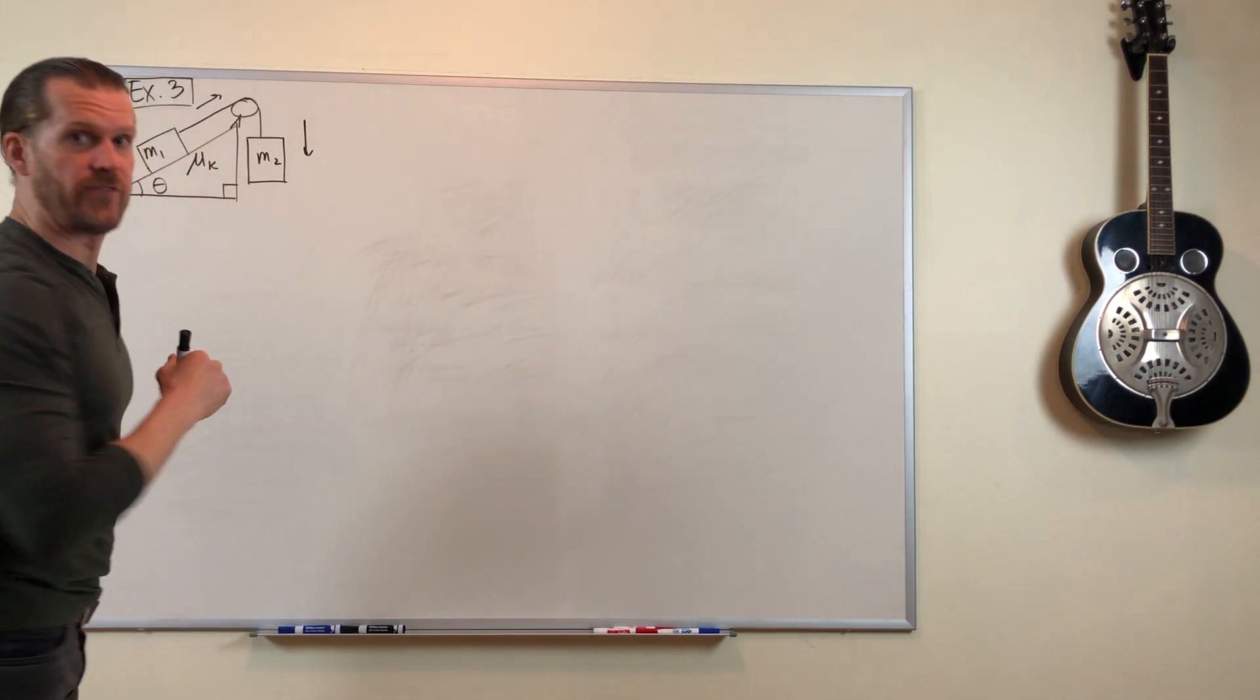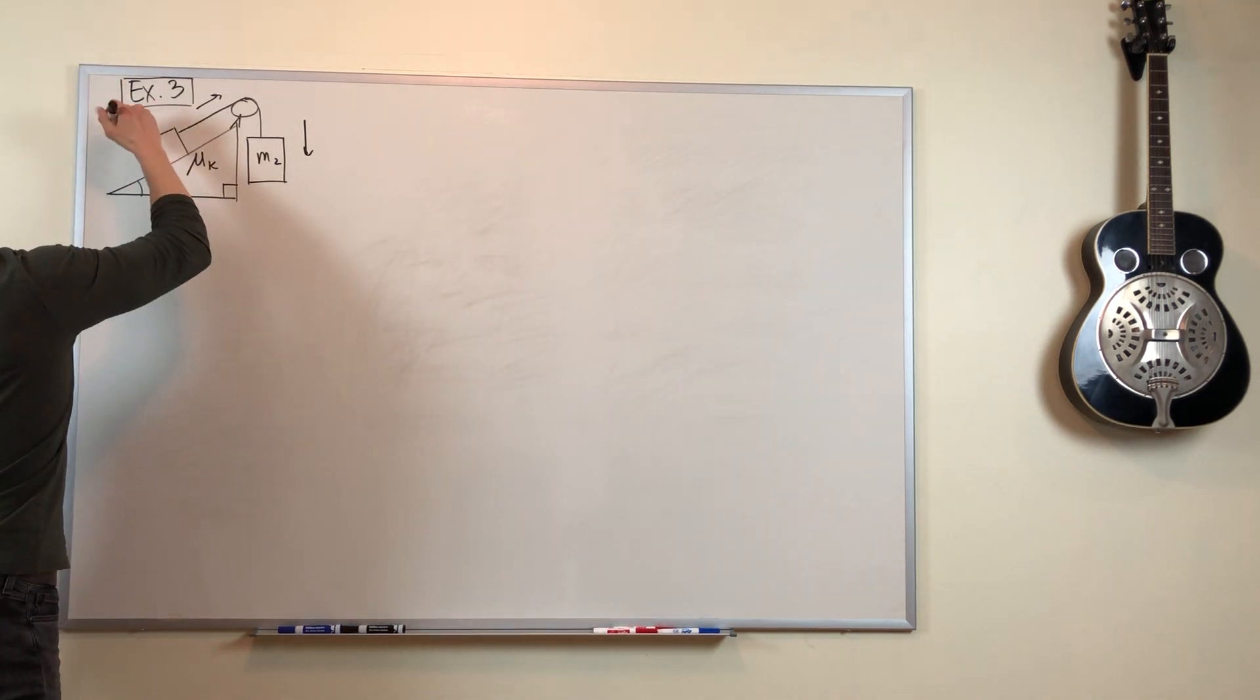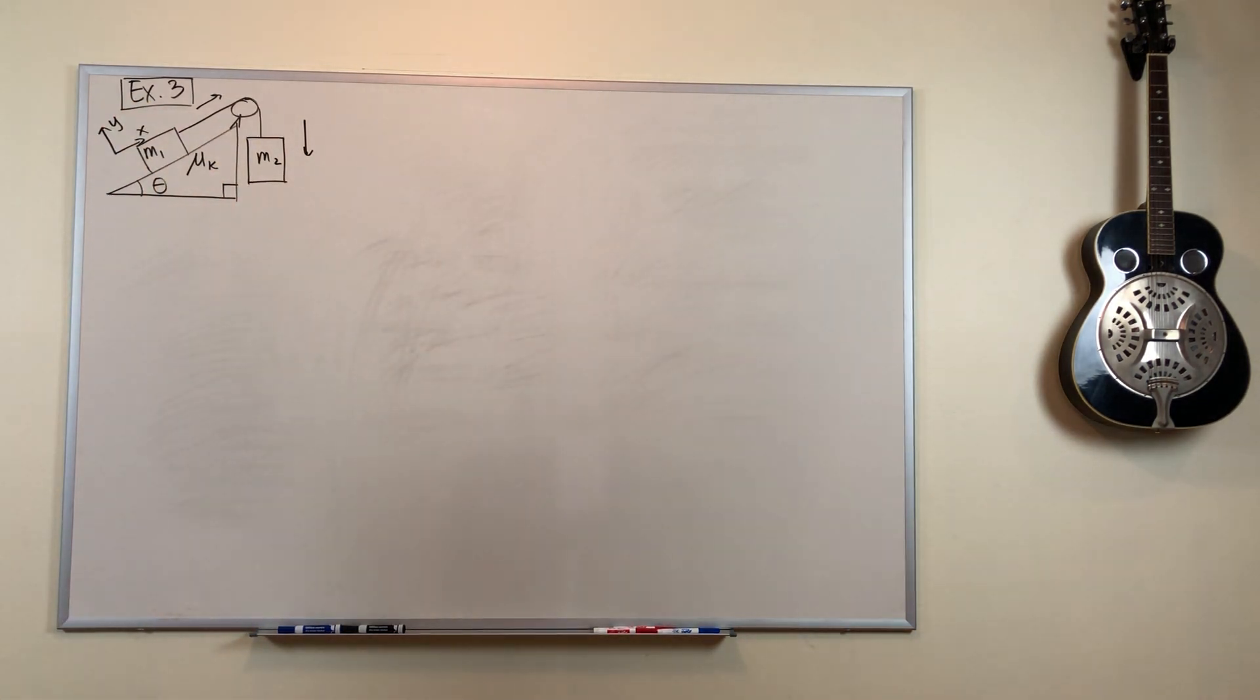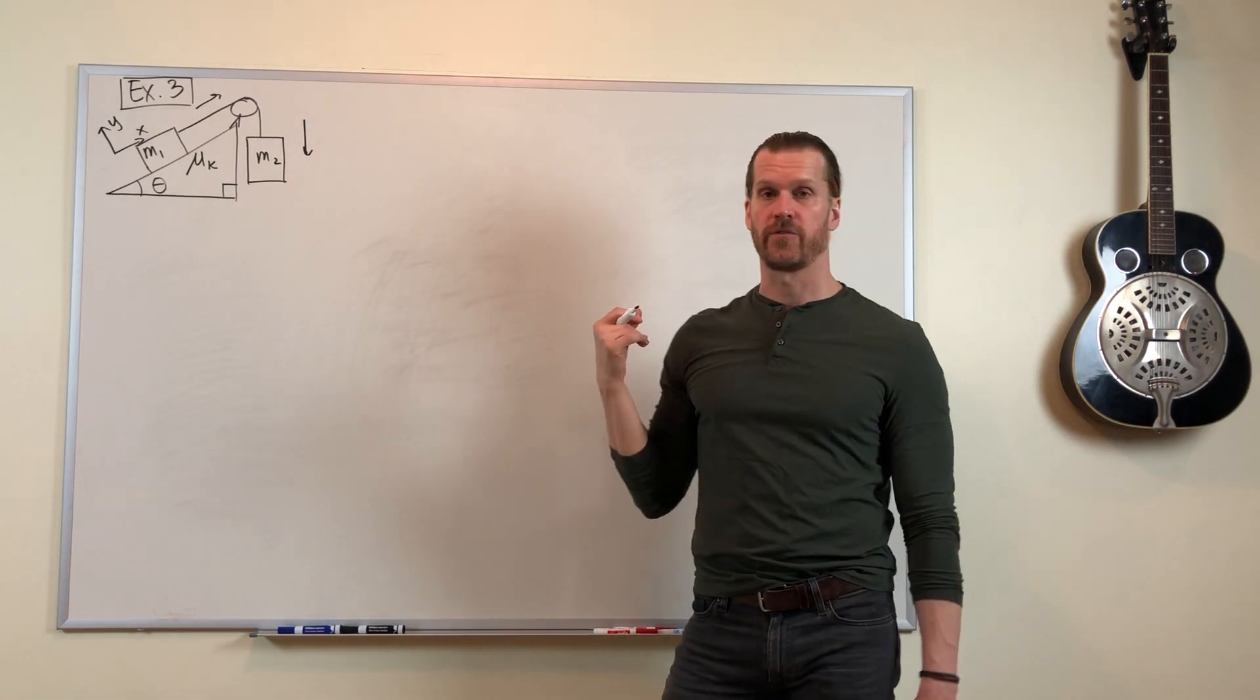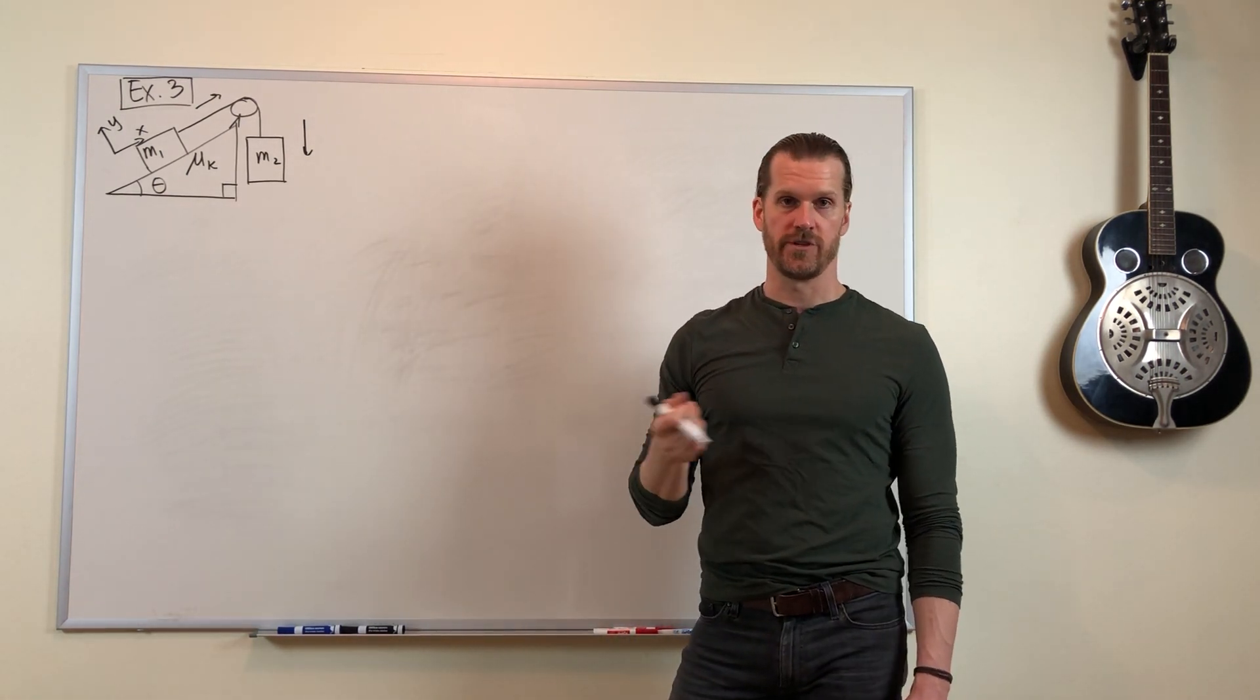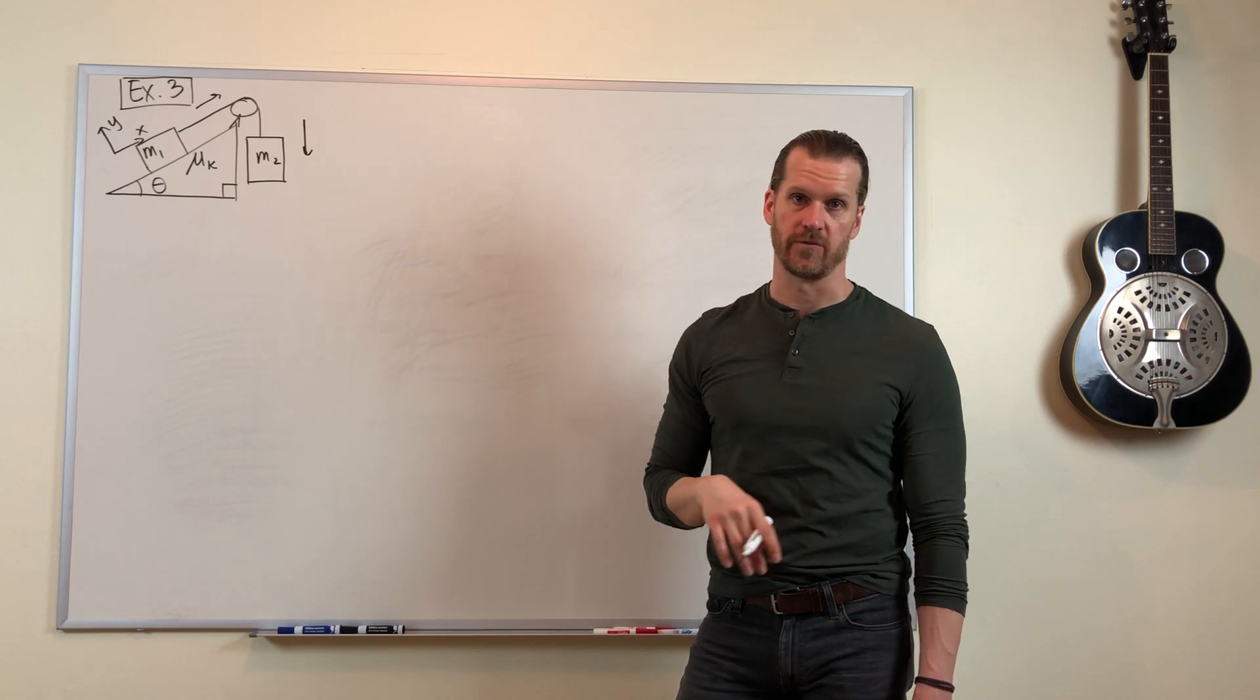So we'll start with mass 1. Remember, because it's on an incline, we'll choose a coordinate system where the x-direction points along the slope in the direction of motion, and the y-direction points perpendicular to the slope.